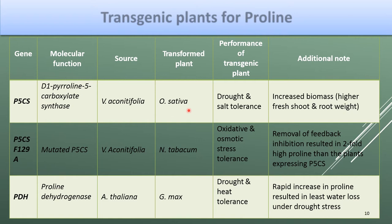Transgenic plants engineered for proline accumulation include Oryza sativa, Nicotiana tabacum, and Glycine max. In Oryza sativa, drought and salt tolerance were observed along with increased biomass — increased fresh shoot and root weight. In Nicotiana tabacum, oxidative and osmotic stress tolerance were seen, with removal of feedback inhibition resulting in twofold higher proline. In Glycine max, drought and heat tolerance was seen along with rapid increase in proline resulting in least water loss under drought stress.